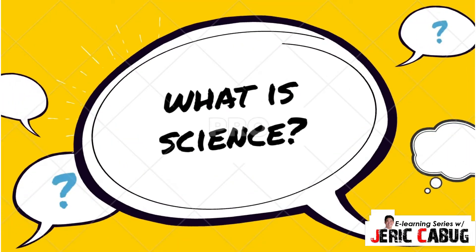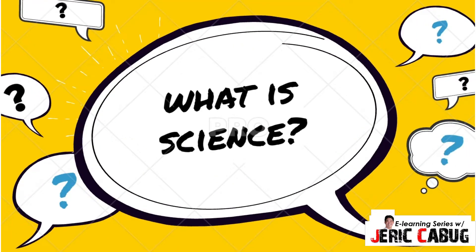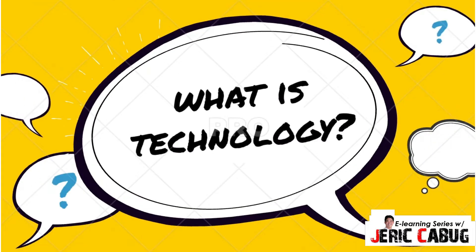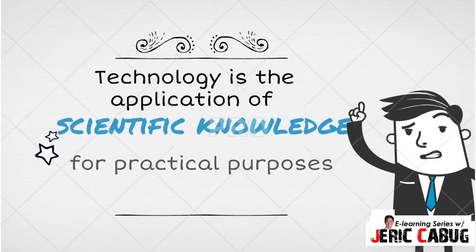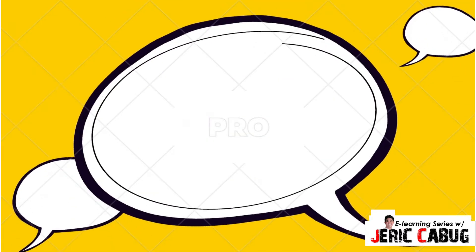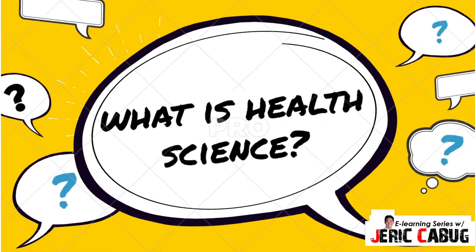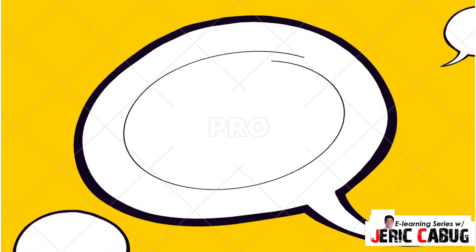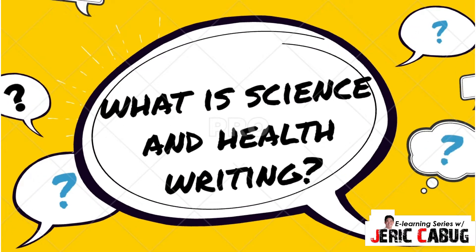Let's start first with science. In our academic knowledge, science is a systematic enterprise that builds and organizes knowledge in a form of explanation and predictions about nature and the universe. While technology is the application of scientific knowledge for practical purposes. Now, the next question is what is health science? Health science, on the other hand, is the discipline of applied science which deals with human and animal health.